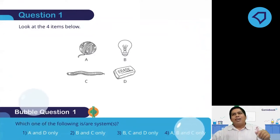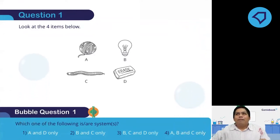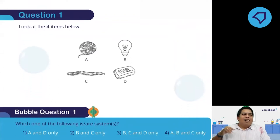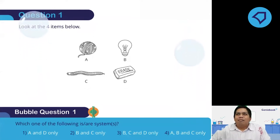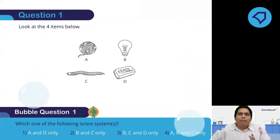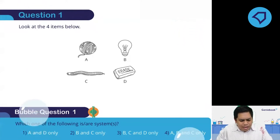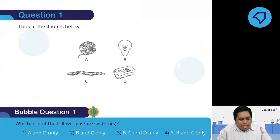Five, four, three, two, one. I'll start the timer right now. Let's see the results — not bad. About 80% of you got it correct. Well done. So let's look at the question together. It says: from the items below, which ones are systems?